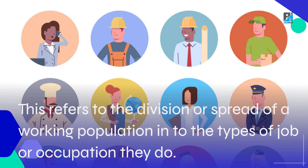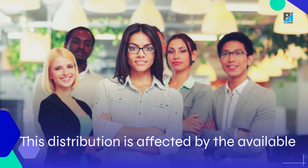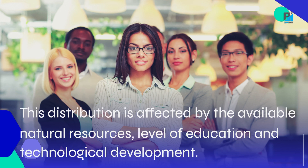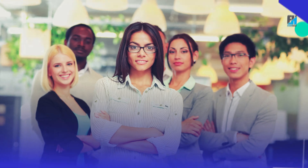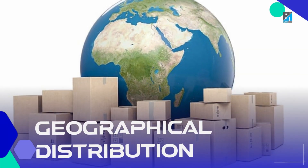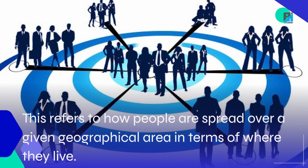Occupational distribution refers to the division or spread of a working population into the types of jobs or occupations they do. This distribution is affected by the available natural resources, level of education, and technological development.